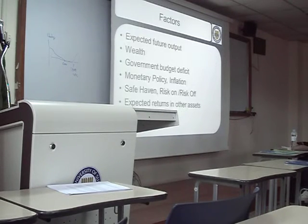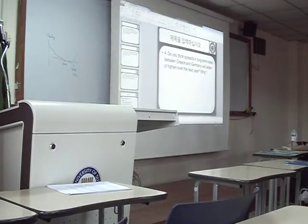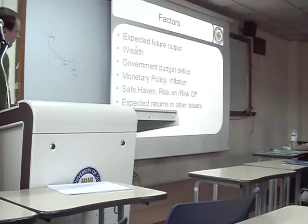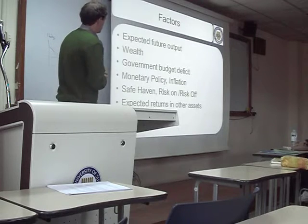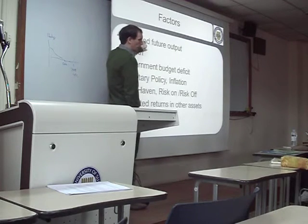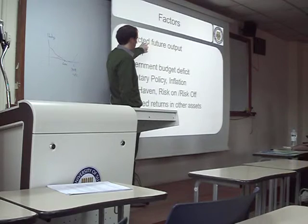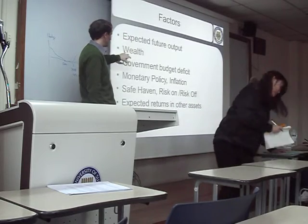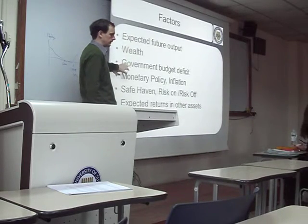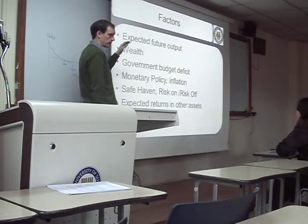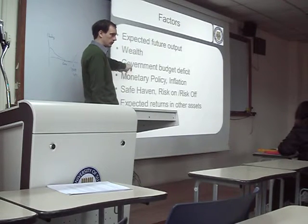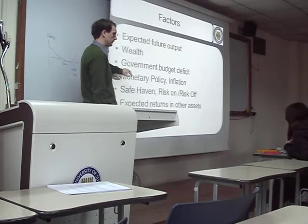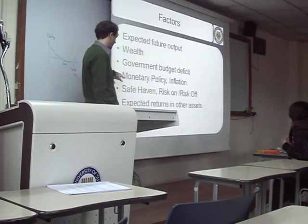These are the kind of factors we talked about in the last class that can affect the supply and demand of bonds: GDP growth, expected future output — do we expect GDP to grow or not? Do we have a lot of savings in the world economy? The government budget deficit — is the government spending a lot more money, does it have a lot of debt? Monetary policy — are we doing QE, are we raising the interest rate, or what about inflation?